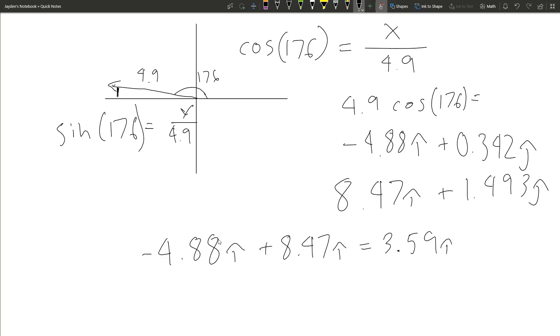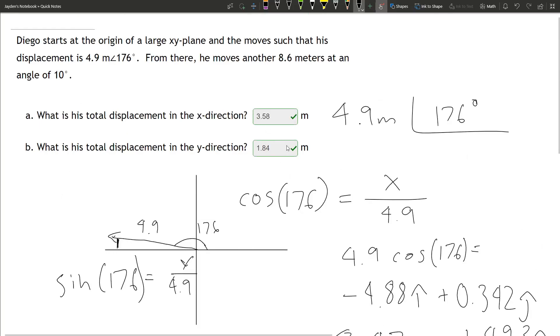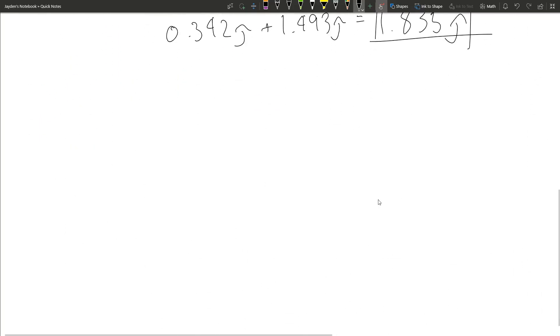Then we can also add the j values to find the j component, 1.835j. That's our answer. We plug those in and we get the correct answers.